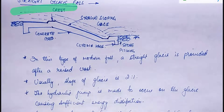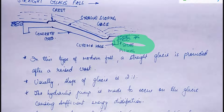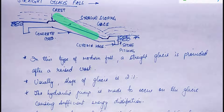There is one more type called the straight glacis fall. Here you can see a straight sloping glacis with a concrete bed, stone pitching, and curtain walls on both upstream and downstream sides. You can see a small crest going up, then coming down, and on the downstream side a small dip before it rises up again.